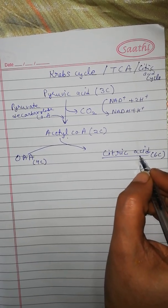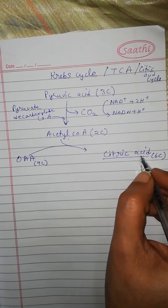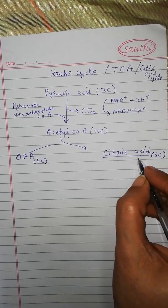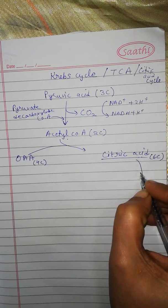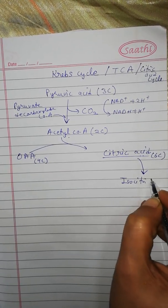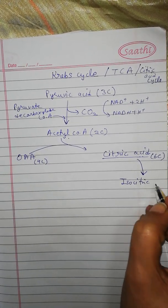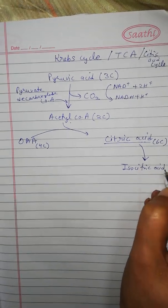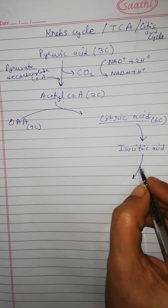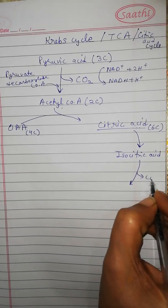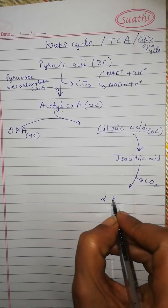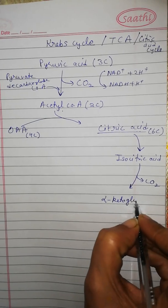Since citric acid is the first product, the cycle is also known as citric acid cycle. Now this citric acid is isomerized to form isocitric acid, and then this isocitric acid gets decarboxylated to form alpha-ketoglutaric acid.